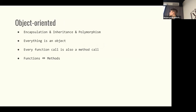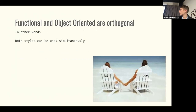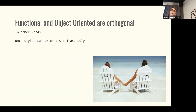Scala is also object-oriented, meaning it supports the three main principles of object orientation: encapsulation, inheritance, and polymorphism. Also, everything in Scala is an object, and every function call is also a method call in terms of object orientation. You may notice there are no conflicts between the functional and object-oriented definitions — they can be used simultaneously. They are orthogonal. In this sense we can mix both styles at the same time because Scala allows us to do that.